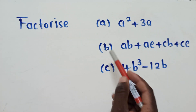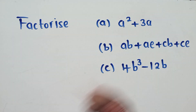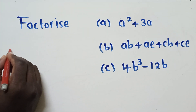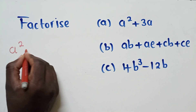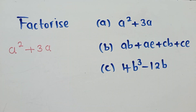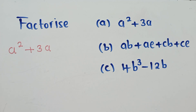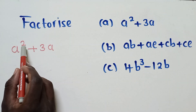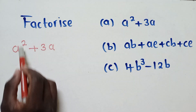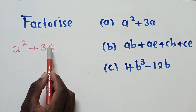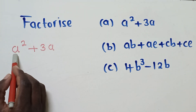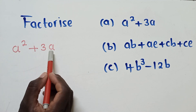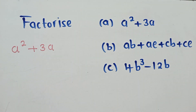To factorize question A, we have a² + 3a. We must first understand what 'factorize' means — they are simply asking us to find what is common. We have a² and 3a, so we can see that 'a' is found in both terms.